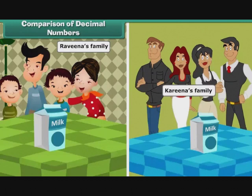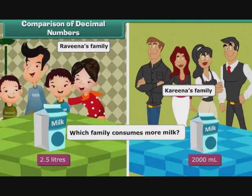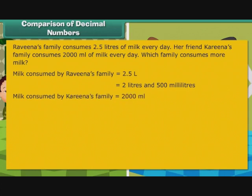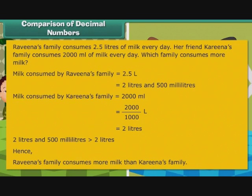Let us look at one more problem. Raveena's family consumes 2.5 liters of milk every day. Her friend Karan's family consumes 2000 milliliters of milk every day. Which family consumes more milk? Milk consumed by Raveena's family is equal to 2.5 liters, that is equal to 2 liters and 500 milliliters. Milk consumed by Karan's family is equal to 2000 milliliters, that is equal to 2000 by 1000 liters, that is equal to 2 liters. Since 2 liters and 500 milliliters is greater than 2 liters, Raveena's family consumes more milk than Karan's family.